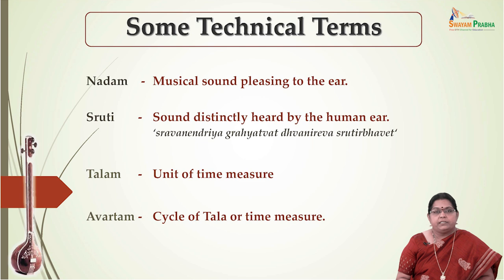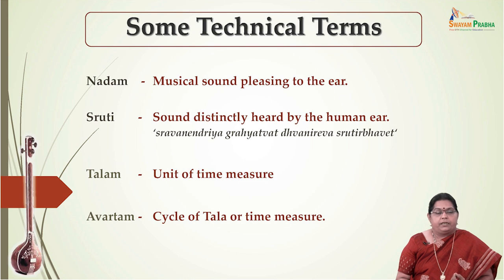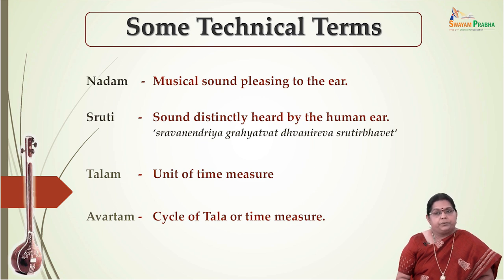Let us understand some technical terms before getting into the practical lessons. The source of music is sound. Nadam is a musical sound which is pleasing to the ear. Shruti is one of the basic elements of music and it is defined as Shruyanta Iti Shruti — Shruti means that which is heard. Shruti is the sound which can be distinctly heard by the human ear; in music, it is the smallest audible sound which has a musical value, as defined in Sravani Indriya Grahya Tvata Dhanireva Shrutir Bhavet.